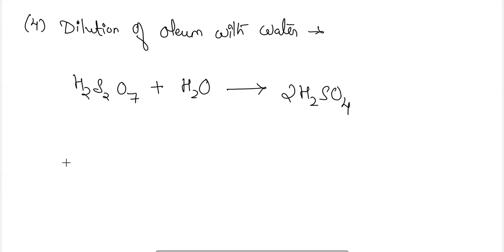To maximize SO3 production, according to Le Chatelier's principle, we decrease the temperature (as it is exothermic) and use high pressure. A catalyst, vanadium pentoxide (V2O5), is also used.